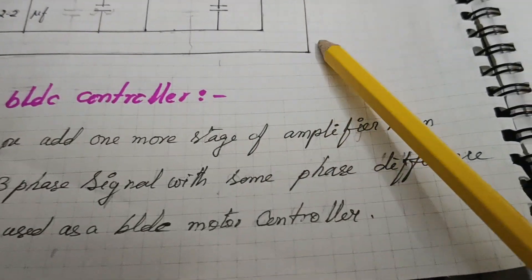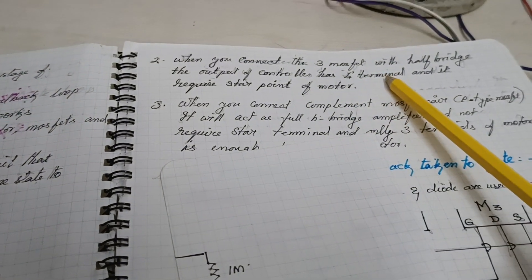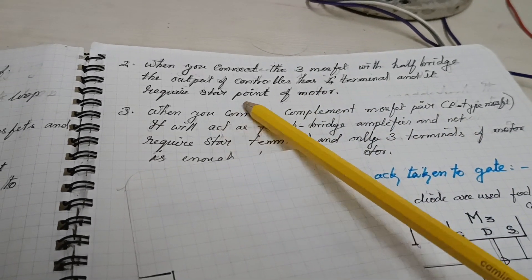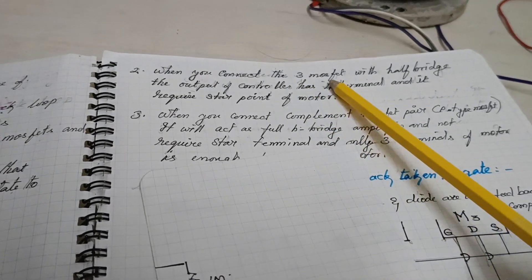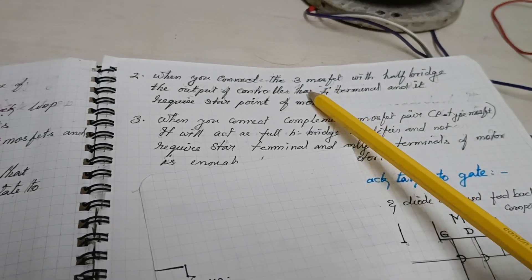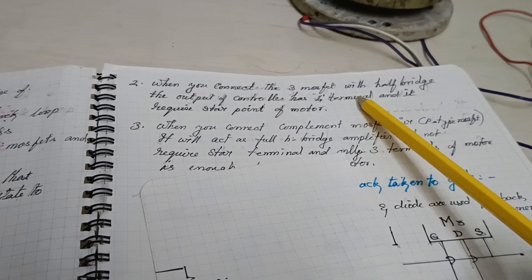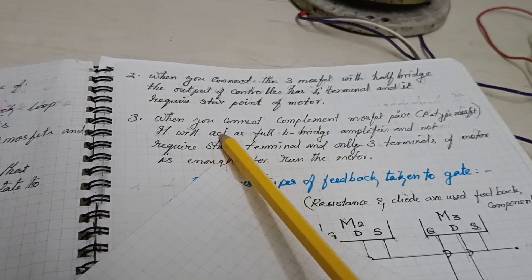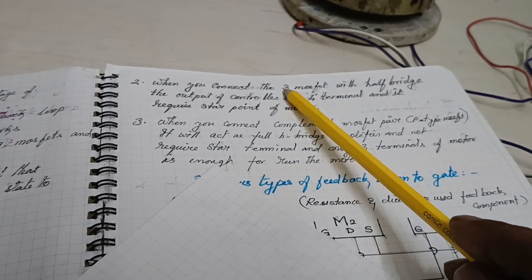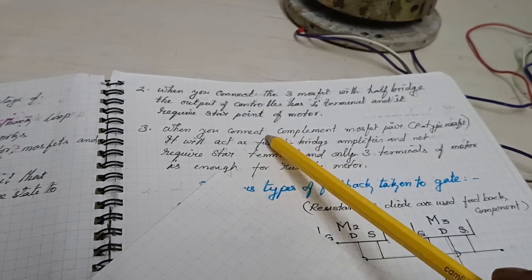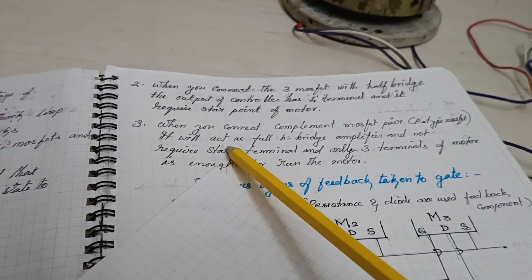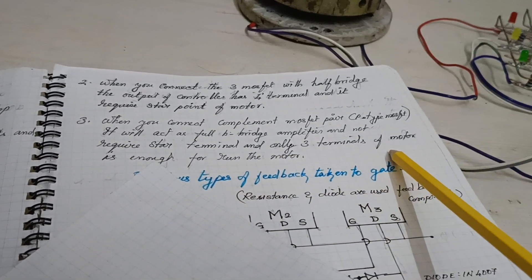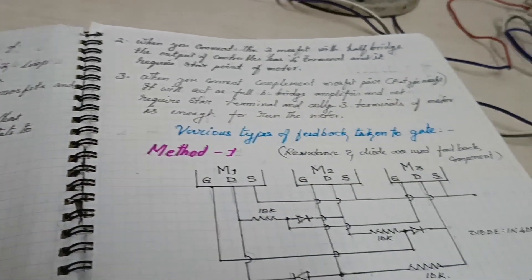When you connect three MOSFETs, the output of the controller has four terminals. To run the motor you need three phase terminals and one star-point terminal. However, when complementary MOSFETs are connected — the existing three MOSFETs are N-type and the complementary MOSFETs are P-type — it acts as a full-bridge amplifier and the star terminal is no longer required, so only three terminals are enough to run the motor.